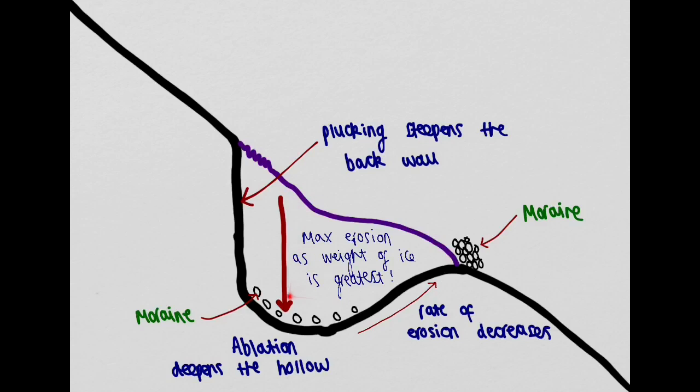The maximum rates of vertical erosion are found where the weight of the ice is greatest. These processes combined create a steep back wall and a hollow known as a corrie.